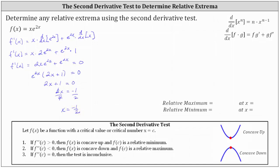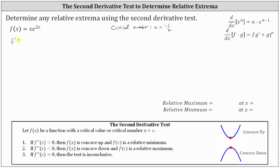We record the critical number x equals negative one half. Now we determine the second derivative so that we can determine the sign of the second derivative at this critical number. To find the second derivative, we differentiate the first derivative f prime of x equals 2x·e to the 2x plus e to the 2x.